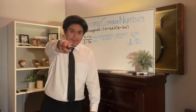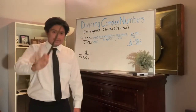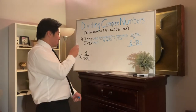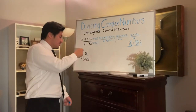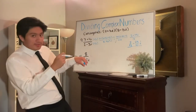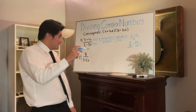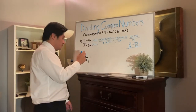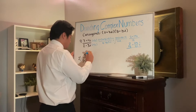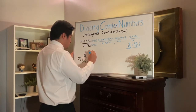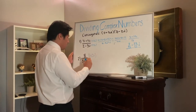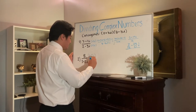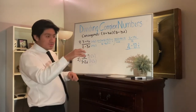Welcome back to part two. The next equation is going to be 8 over 3 plus 2i. We're going to use the conjugate again, but this time it's going to be subtraction, so it's going to be 3 minus 2i on both sides.